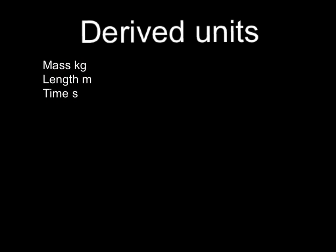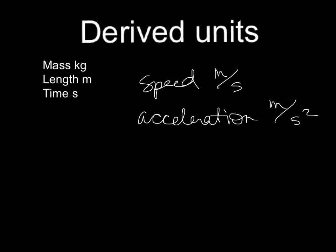One example is speed. Speed is in meters per second. Acceleration, which we're going to run into pretty soon, is in meters per second squared. Newtons, which is a force unit, is kilograms meters per second squared. And since that's so ugly, we rename it as a newton. You're going to run into that more later.